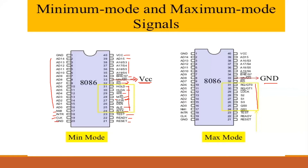If it is the minimum mode, we have to use specific pins. In maximum mode, QS0 and QS1 — that is Queue Status — indicates the pin combinations. The RQ/GT (Request/Grant) pins handle bus requests. RQ/GT0 and RQ/GT1 are used for bus request and grant.